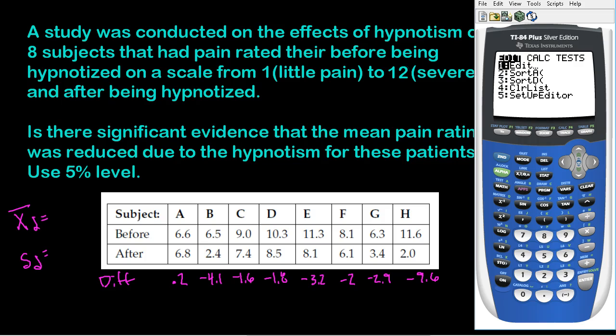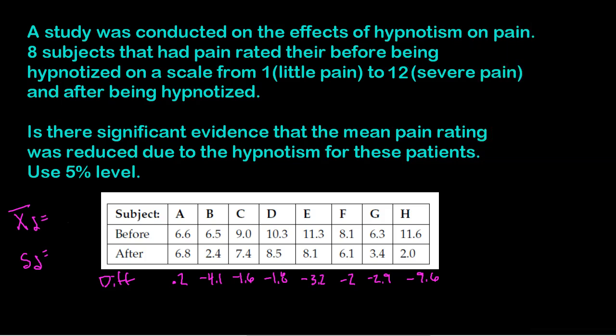I'm going to go stat edit. I already have them typed into the calculator. I typed in the differences. Again, don't type in before. Don't type in after. I don't care about those numbers. I care about the difference. Because the only way I could show that being hypnotized makes you have less pain is if I show that there is a difference. So once you have those typed in, you're going to hit stat. Go to calc. We're going to one variable stats. Make sure you choose the proper list. List one for me. And you will get the mean difference, negative 3.125, which means the average of my eight people was a loss of 3.125 pain. The standard deviation was 2.9114. I'm going to write those numbers down because I will need them for the rest of my problem.